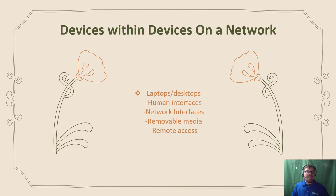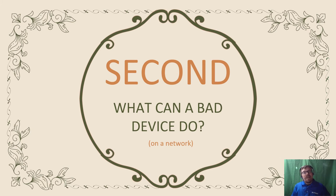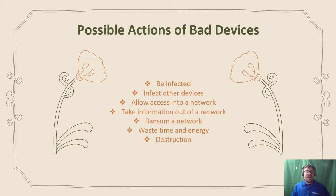Now, those devices — let's say one goes bad. What can a bad device do in a network? Here are some possible actions; this isn't an exhaustive list. A bad device could simply be infected, which is generally bad on its own. It could infect other devices or allow access into a network, acting as a pivot point for an infection. It could also exfiltrate things — take information out of a network — or even put information into a network.